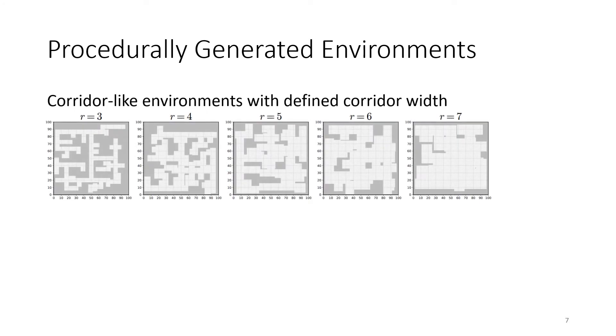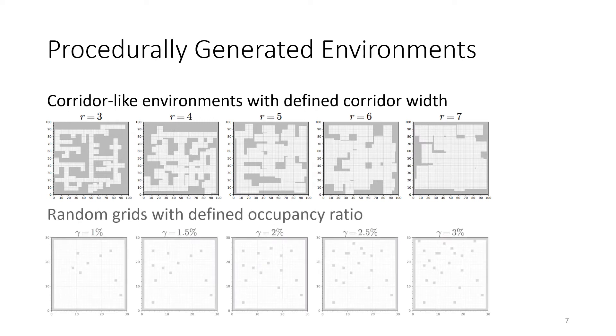We also implement various techniques of procedurally generated environments. Occupancy grids resembling corridor-like environments can be randomly generated for different corridor sizes and complexities. Furthermore, random grids can be generated with a defined occupancy ratio.